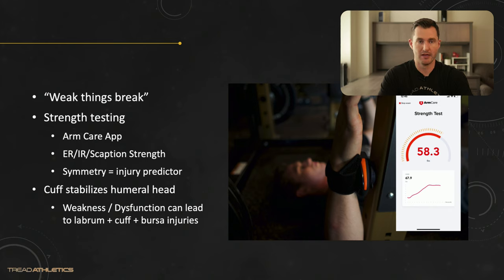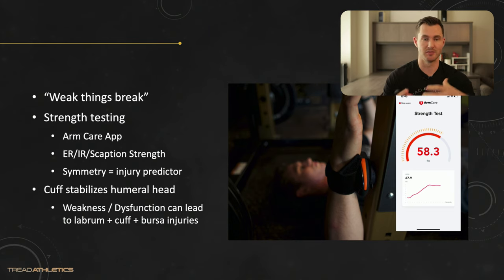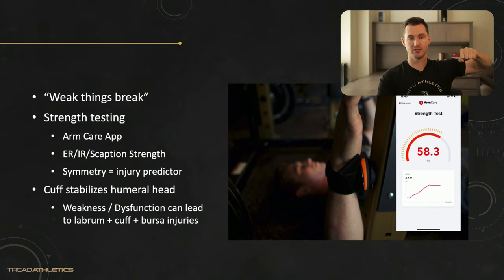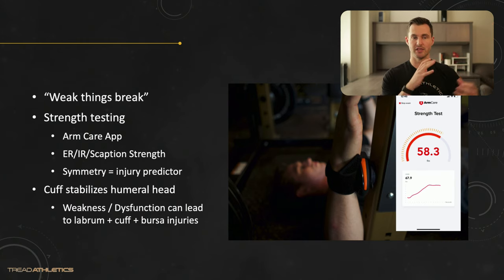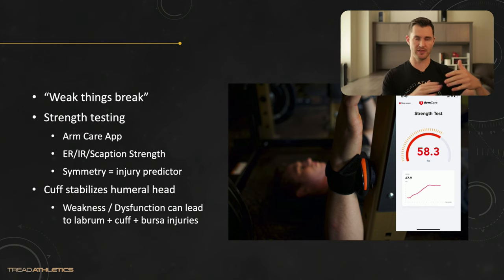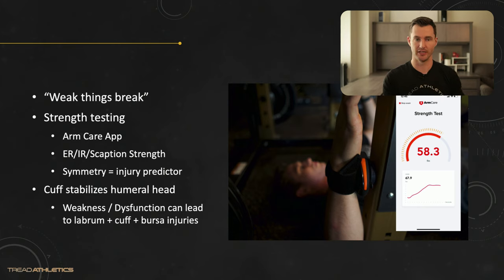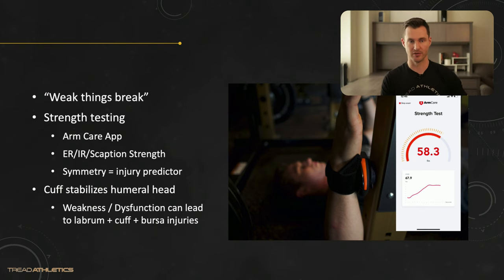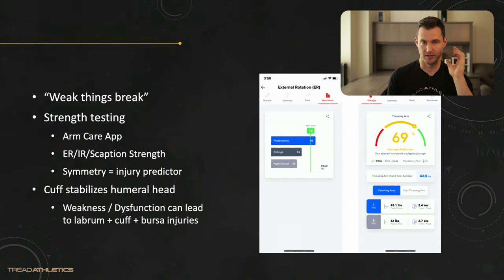One of my favorite ways to test shoulder strength is with the ArmCare app. They send you a dynamometer — a strength sensor — that you strap onto your wrist and sync to an app on your phone. You can test how strong you are in internal rotation, external rotation, various scap positions, and grip, and see how you compare to pitchers at your age. It also breaks down your accelerator-to-decelerator strength ratios and symmetry, helping pinpoint a weak posterior cuff, weak internal rotators, weak scapular muscles, or weak grip, and you can track that over time.